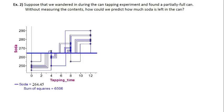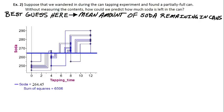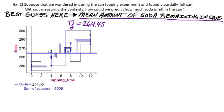You don't have any tools, you can't weigh it, you don't have a least squares regression line. So of the 26 cans that were experimented on, what was the mean amount of soda left in the can? Without knowing anything else, that would be our best guess — the mean from all 26 sodas in the experiment. So our Y variable, our response variable, is the mean amount of soda remaining, which we call Y-bar. That value is 264.45 milliliters.